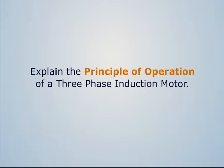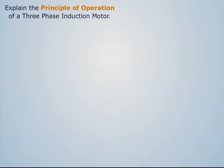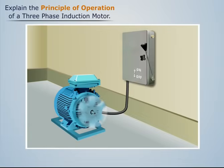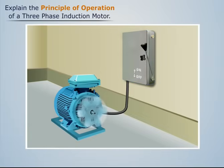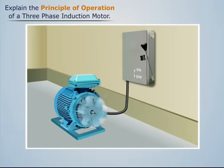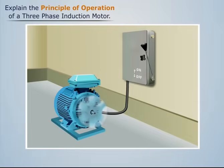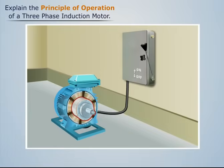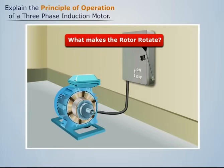Explain the principle of operation of a three-phase induction motor. We know that when a three-phase supply, consisting of three phases and a neutral wire, is connected to a three-phase induction motor, its rotor starts rotating. Let's understand what makes the rotor rotate.